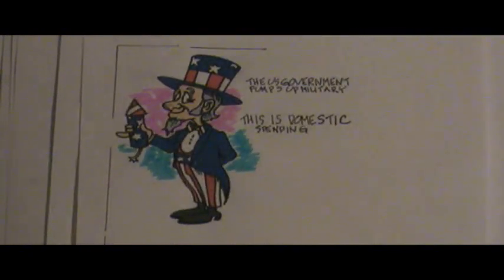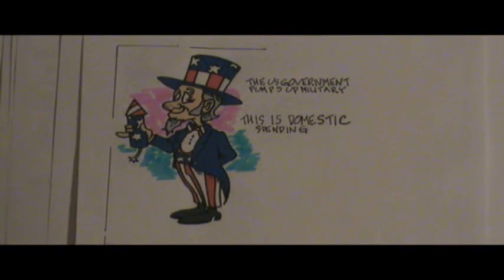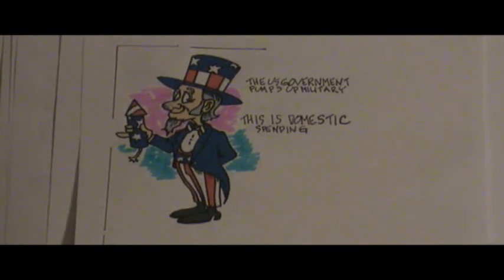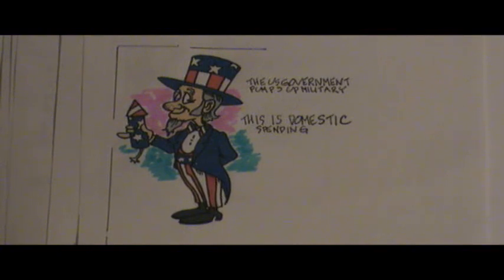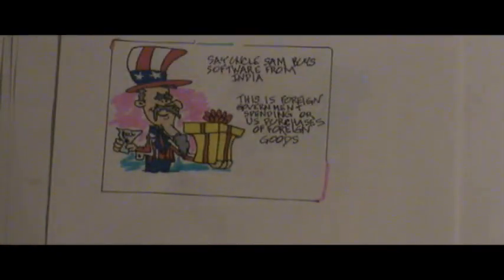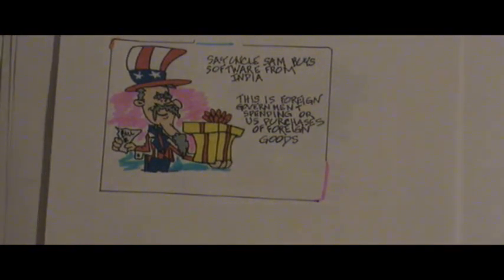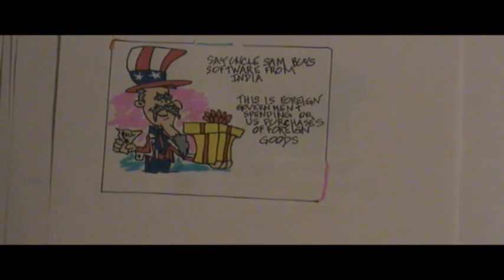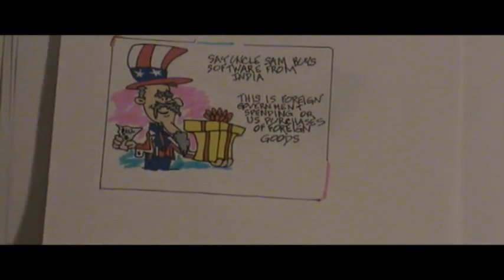Uncle Sam also likes to spend money. Suppose that the government pumps up the military by buying US-made tanks — this would be domestic spending. Likewise, we'll say that the government buys new computer program stuff from India — this would be an example of buying foreign goods by the government.